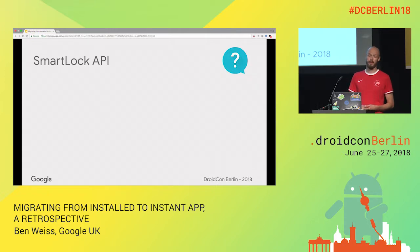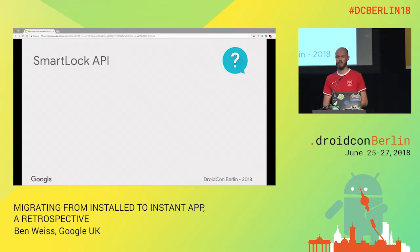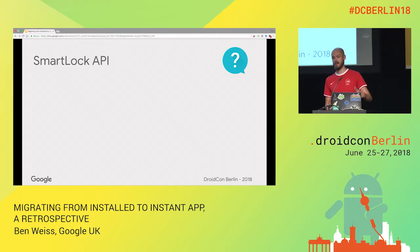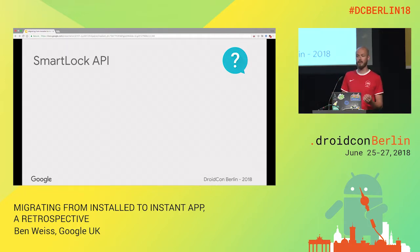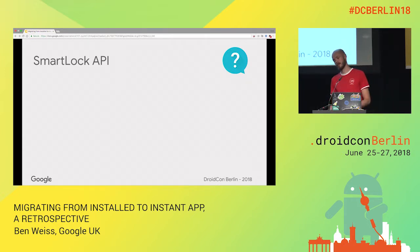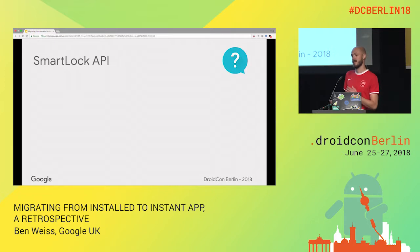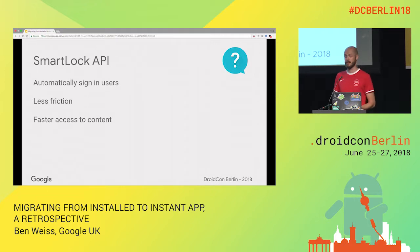Firstly, I looked at the Smart Lock API, which is the preferred way of logging your users in. For example, if you use Netflix and sign in once on an Android device, it stores the credentials, and later on you can retrieve them. It's an opt-in process for the user, but after that, when you install Netflix on another device, you don't have to sign in again. It's a cool feature that reduces friction for users — it automatically signs in users, it's less friction, and it's a lot faster to access the content.